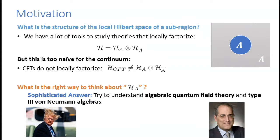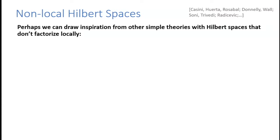Maybe something that these coastal elites don't understand is that I've been to the heartland, walked down Main Street, and people there are nostalgic for a day when an honest person, a little hard work, and some linear algebra gives a ticket to the middle class. So I'd like to understand: is there a more populist approach to understanding the local algebra where I don't need to worry about type-3 von Neumann algebras?